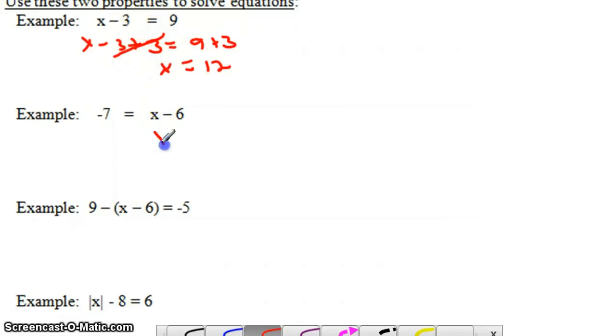For this one, we need to undo subtract 6. The opposite of subtract 6 is add 6, so we add 6 to both the right and left sides of the equation. I know you're thinking, why do I need to show my work? This is very simple.